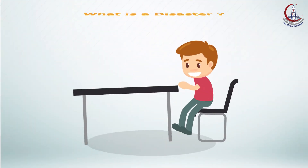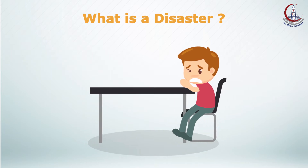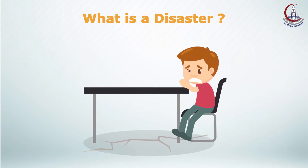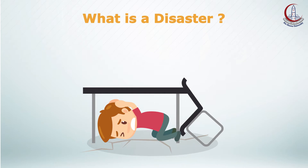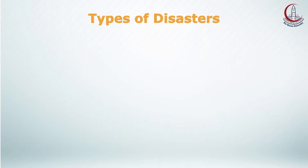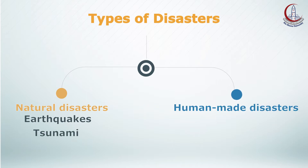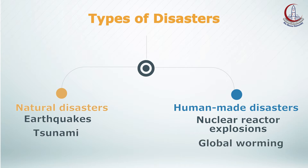A disaster is a sudden accident or a natural catastrophe that causes great damage or loss of life. There are two types of disasters: natural disasters such as earthquakes and tsunami, and human-made disasters or what we call environmental disasters, such as nuclear reactor explosions and global warming.